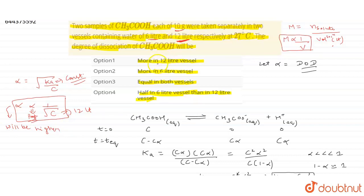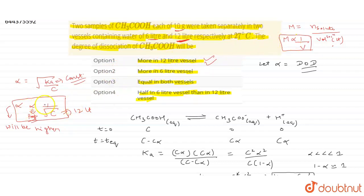Option one — more in 12 liter vessel — is the correct option. The degree of dissociation will be more in the 12 liter vessel because concentration is lower there, and alpha is inversely proportional to root C. So if concentration is lower, alpha will be higher.